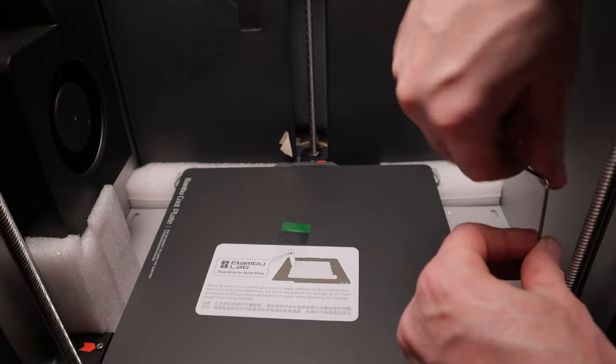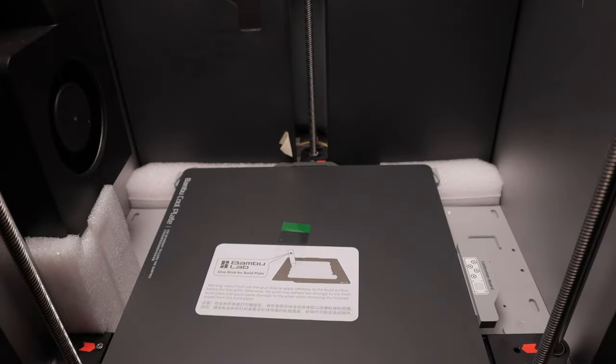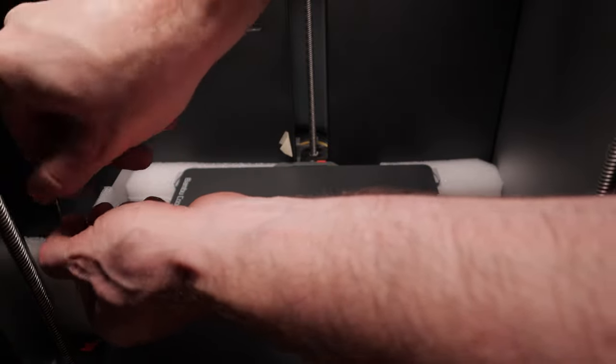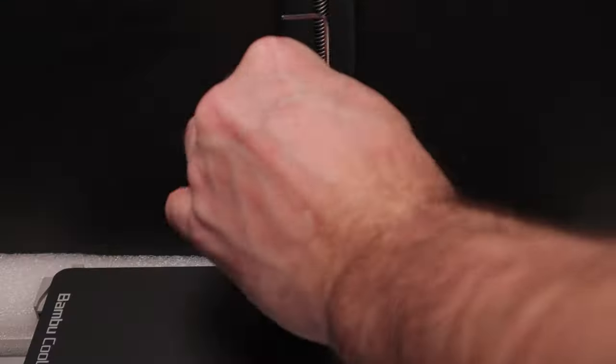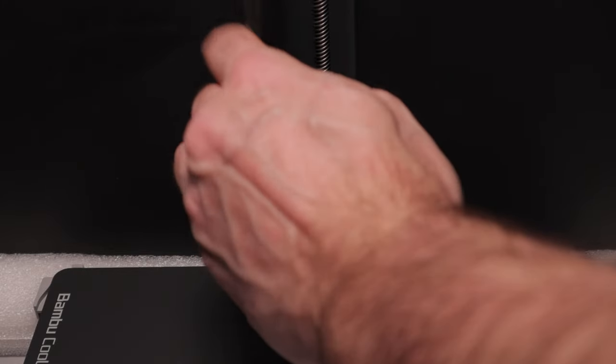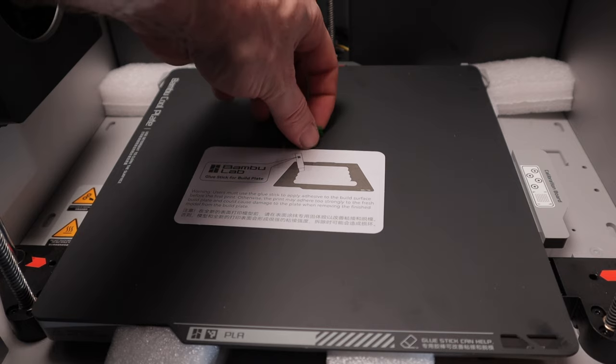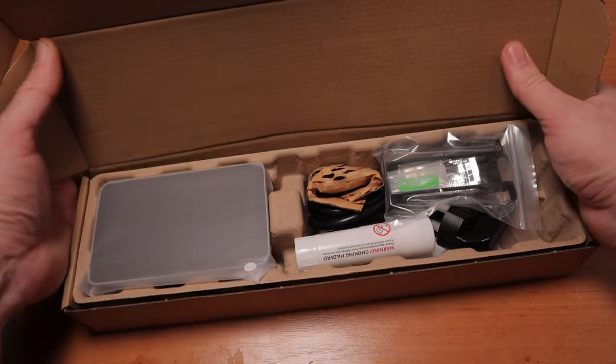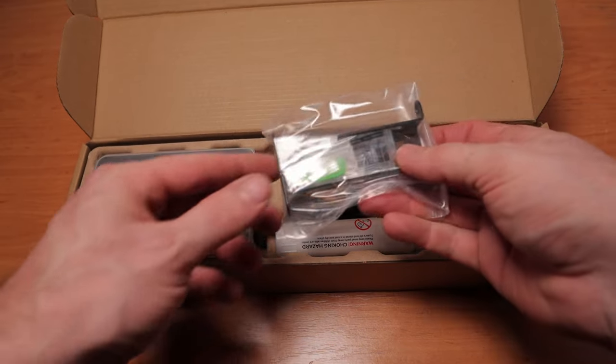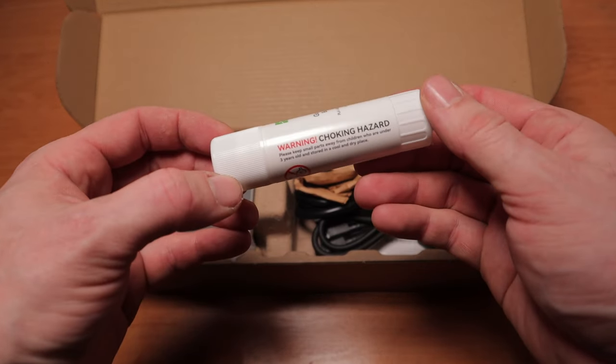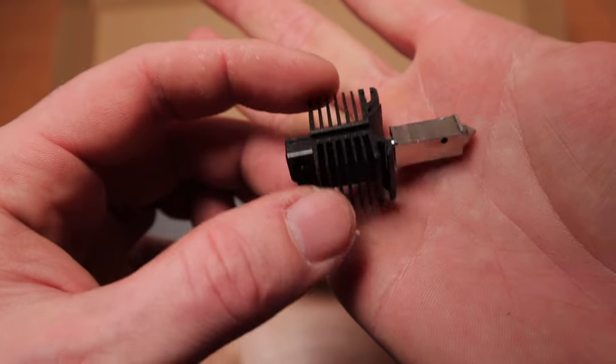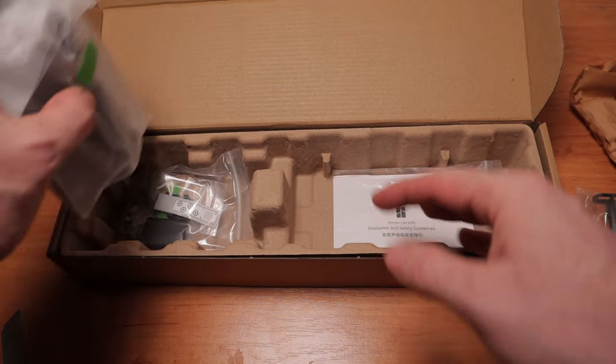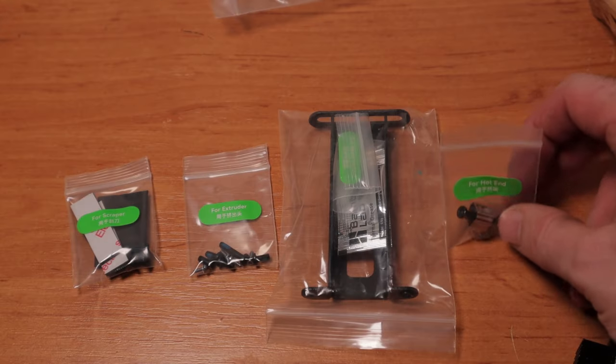Before I power up the printer, I need to unscrew three screws to release the bed. Part of the package is also this box, filament holder, glue stick, spare hardened nozzle, plug, screen and some spare parts.